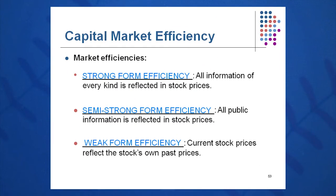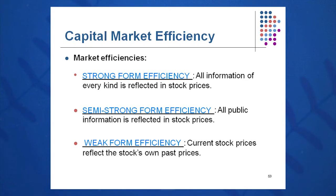You may have three types of capital market efficiency: strong form efficiency, semi-strong, and weak form. Strong form efficiency is where all information of every kind is reflected in stock prices. Semi-strong is where all public information is reflected. And weak form, current stock prices just look at their own past prices.